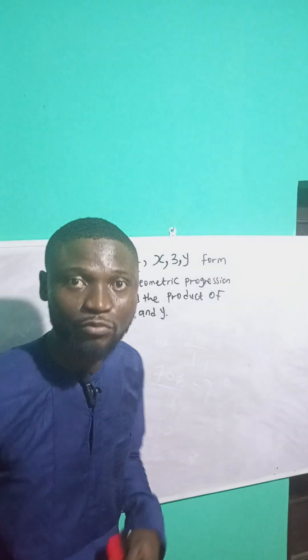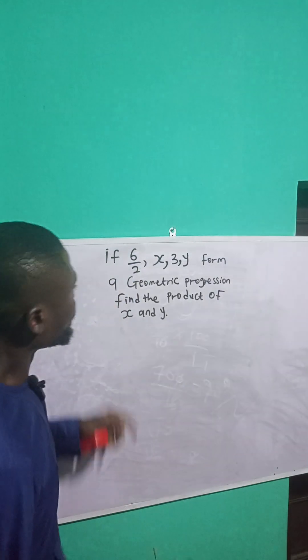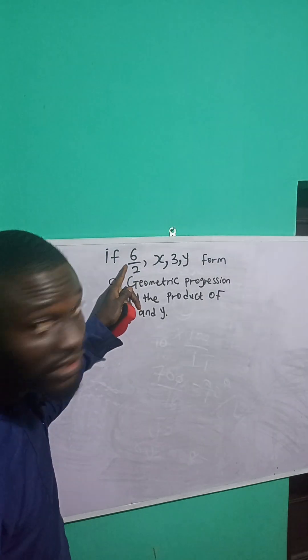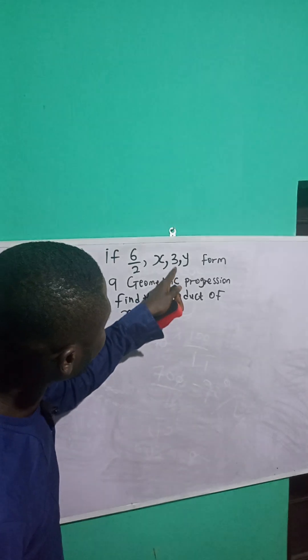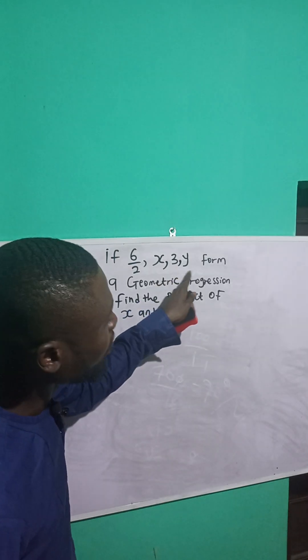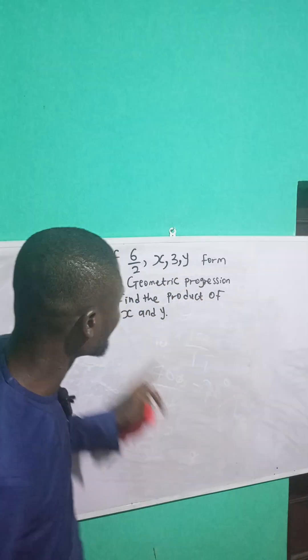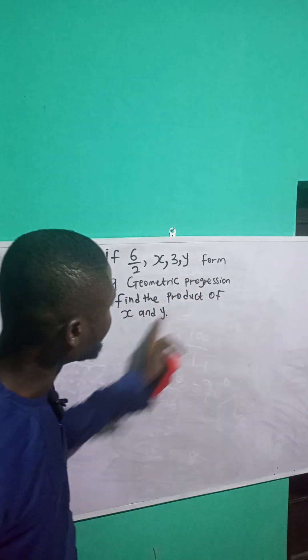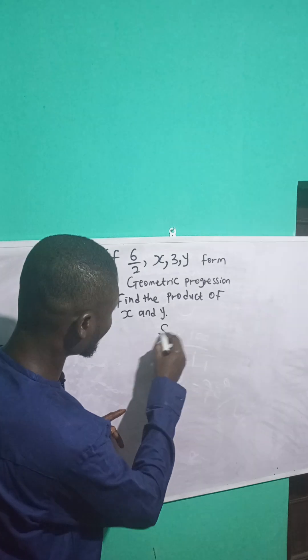Let's consider this question on geometric progression. We have: c, divided by 2, x, 3, and y form a geometric progression. Find the value of x and y.